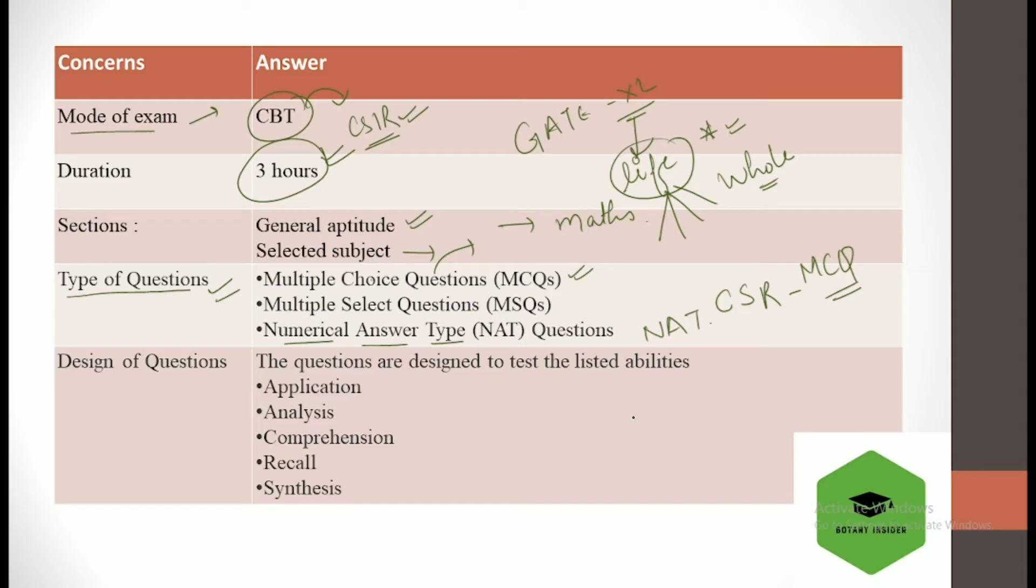What does each of them mean? Multiple choice simply means that you have a question and you have been given four options, you have to select one and you get a correct answer. In the multiple select question, you have one question given, and in that you get some options. Out of the options given, there are more than one options correct, and you have to select all the correct options in order to get the marks.